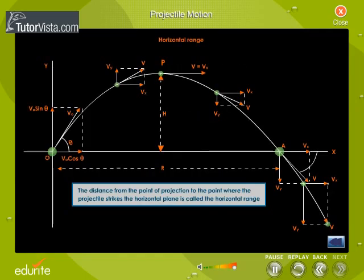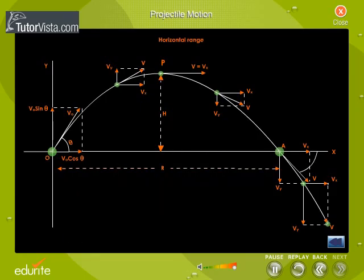Horizontal range. The distance from the point of projection to the point where the projectile strikes the horizontal plane is called the horizontal range. It is denoted by the letter R.